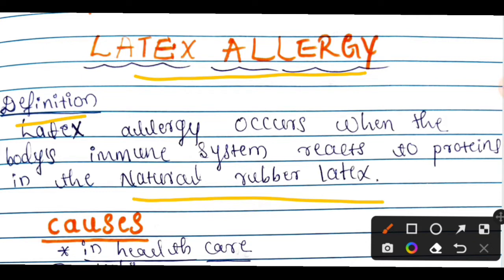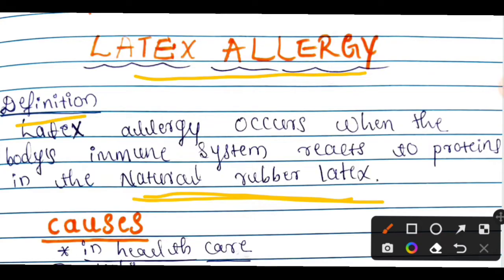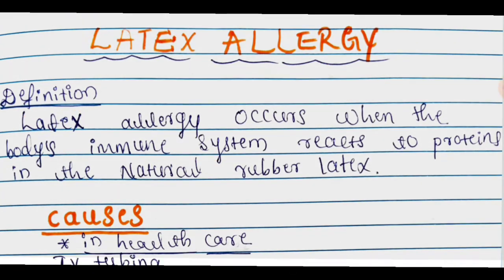Latex allergy occurs when we are exposed to natural rubber latex and our body reacts against it through the immune system. When our immune system reacts against that particular protein found in latex rubber, it is called a latex allergy.